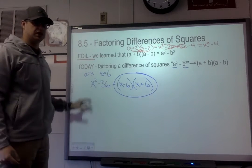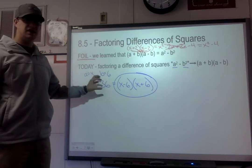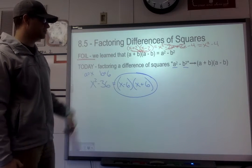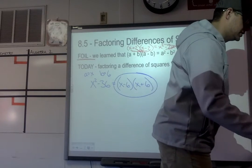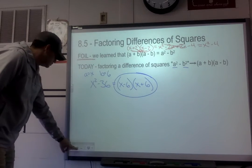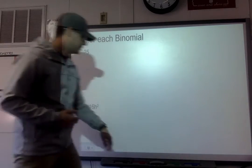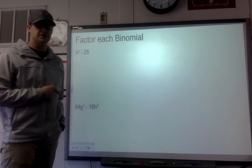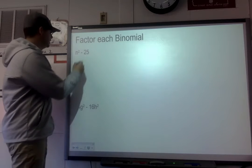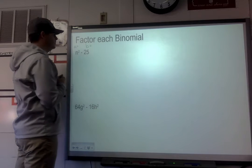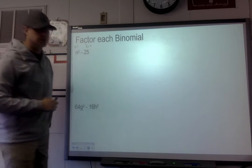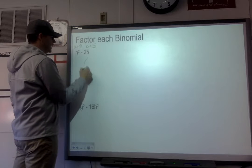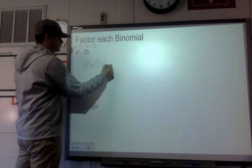When working with difference of squares, there's really not a lot of work to show besides identifying your a and b values and factoring into your two binomials. For example, n² - 25: first, check that both terms are perfect squares. The square root of n² is n, and the square root of 25 is 5. So the factored form is (n + 5)(n - 5).